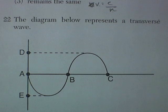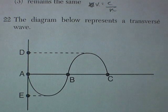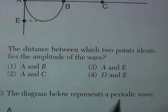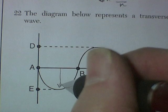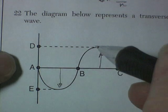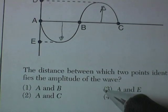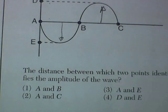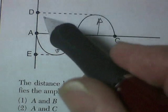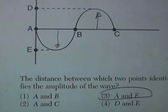Question 22. The diagram represents a transverse wave. Transverse wave goes below and above some rest position. The distance between two points identifies the amplitude. Well, amplitude is the energy or how high above or how far below the rest position it falls. So this would be an amplitude and this would be an amplitude. So let's see. D to A would be an amplitude. A to E would be an amplitude. A to B, that's half a wavelength. A to C, that's a complete wavelength. A to E, there's our amplitude. And D to E, D to E is the total height of the wave, not an amplitude. Okay, so A to E is the correct answer. That would be defined as an amplitude.